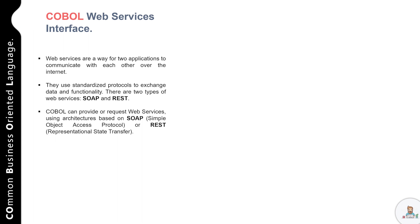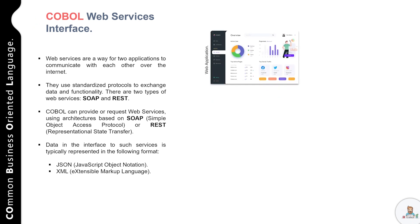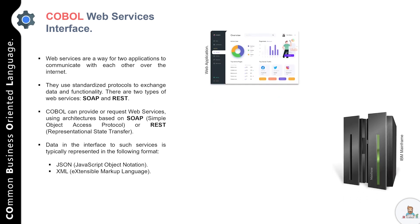Web services use standard protocols to exchange data and functionality. There are two types of web services: the first one is SOAP, that is Simple Object Access Protocol, and the second one is REST, that is Representational State Transfer. COBOL is one of the oldest programming languages still in use, and interestingly it can provide and request web services using architecture based on SOAP or REST.